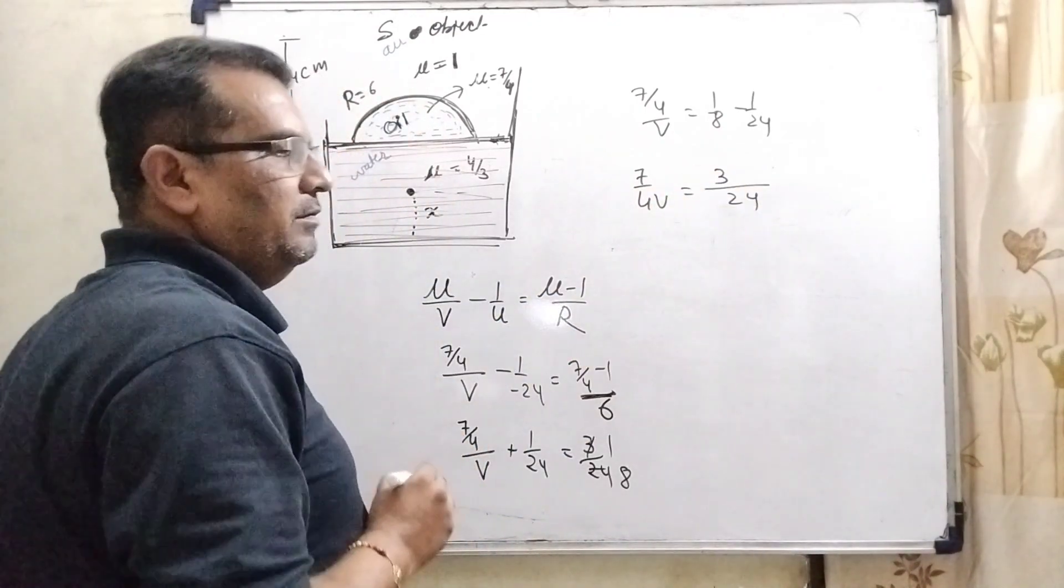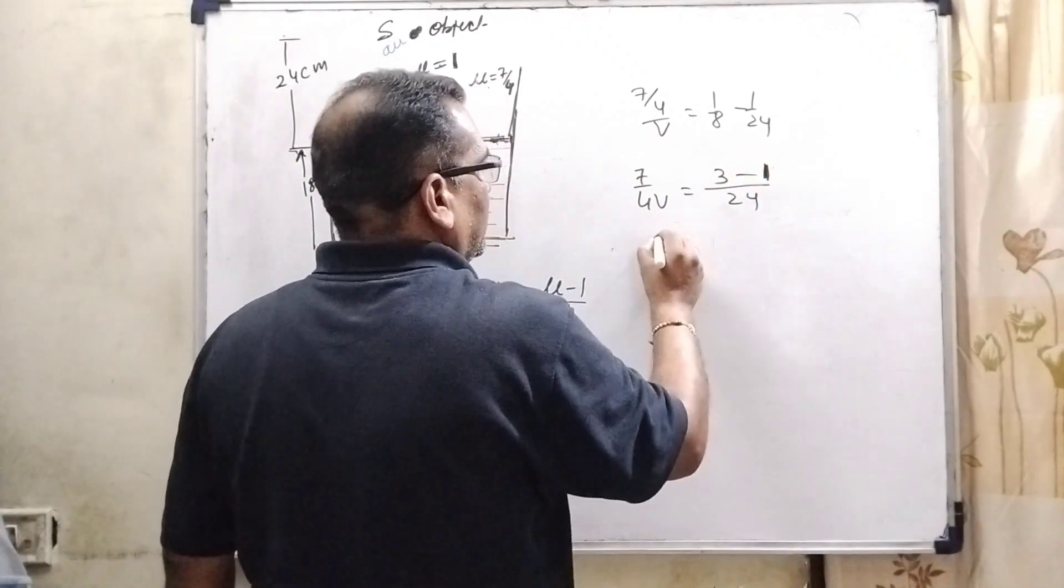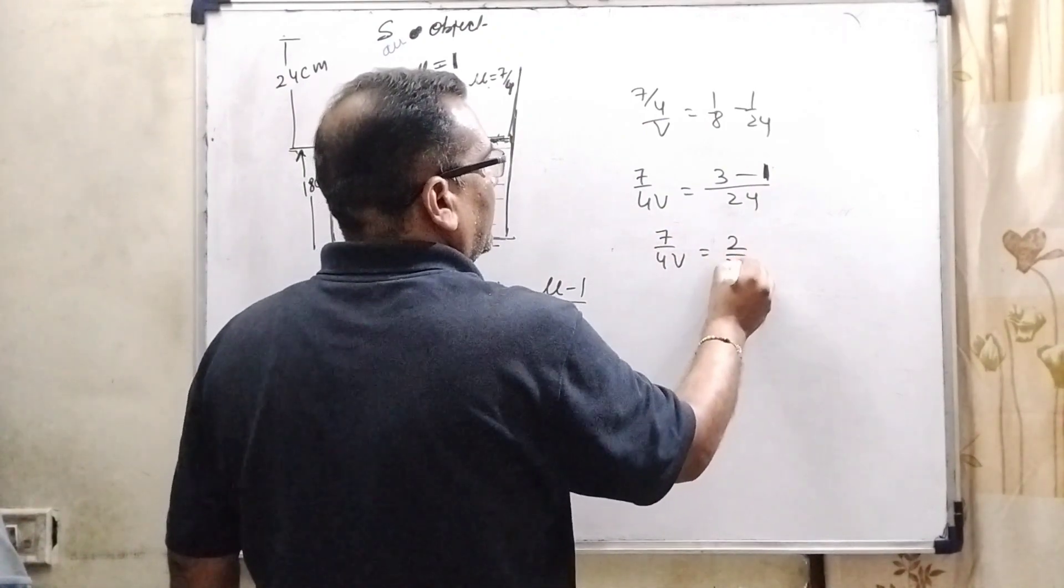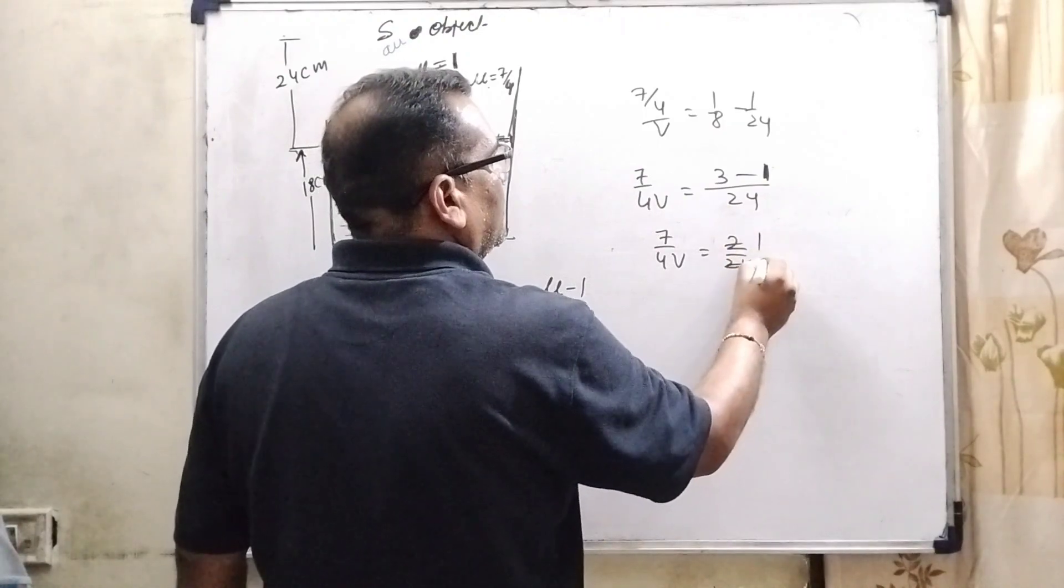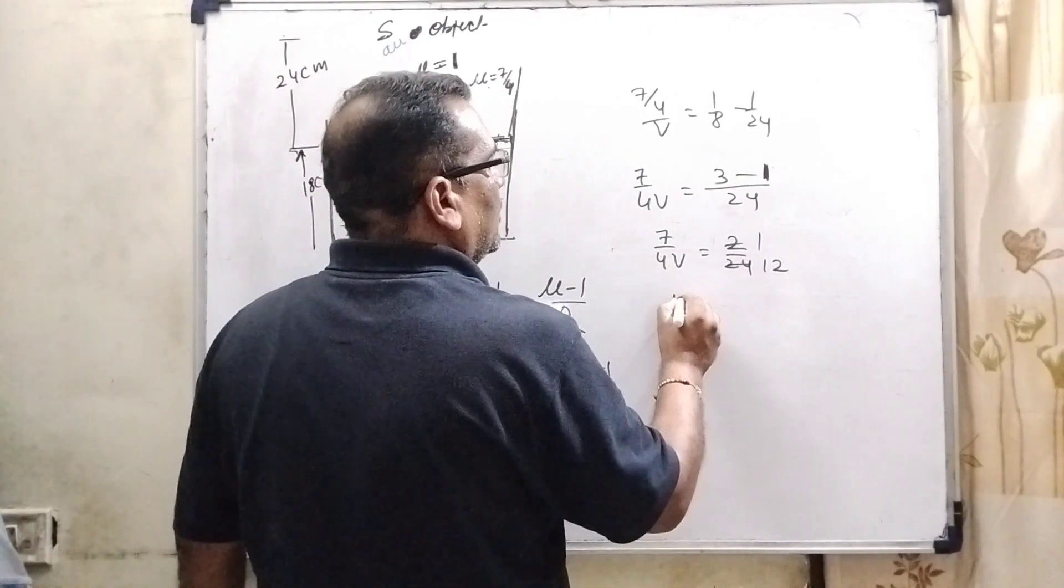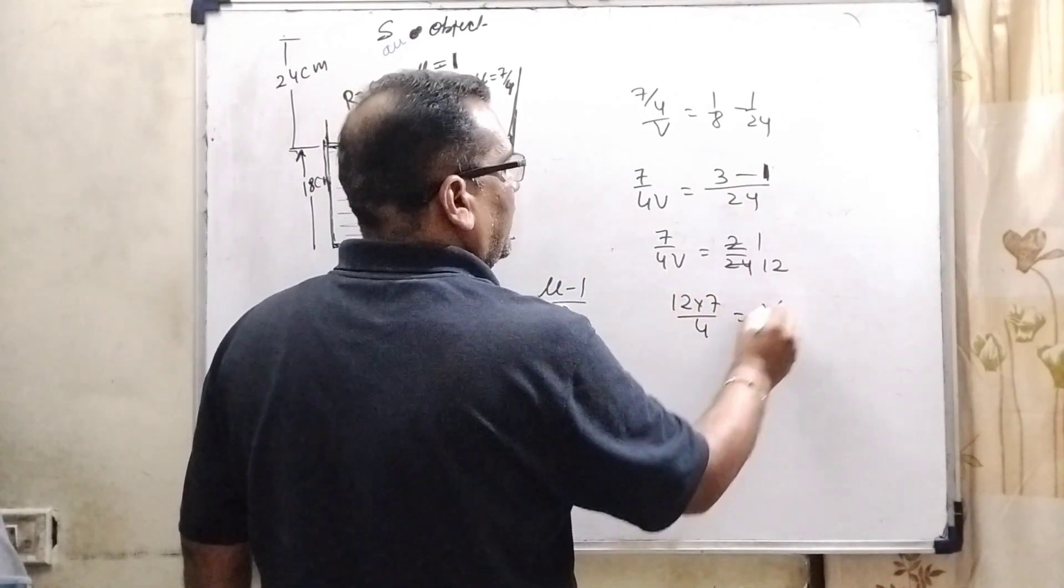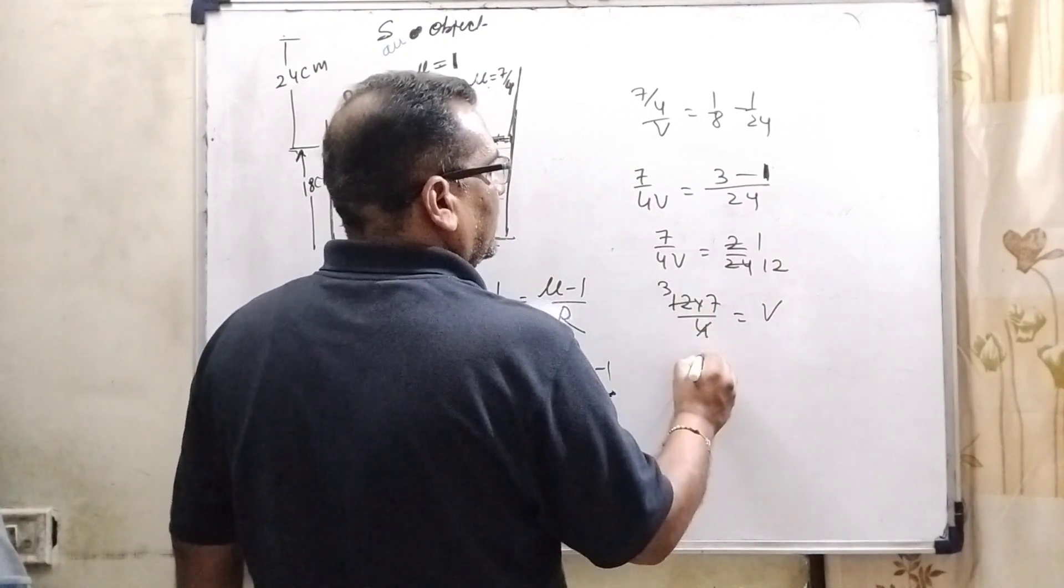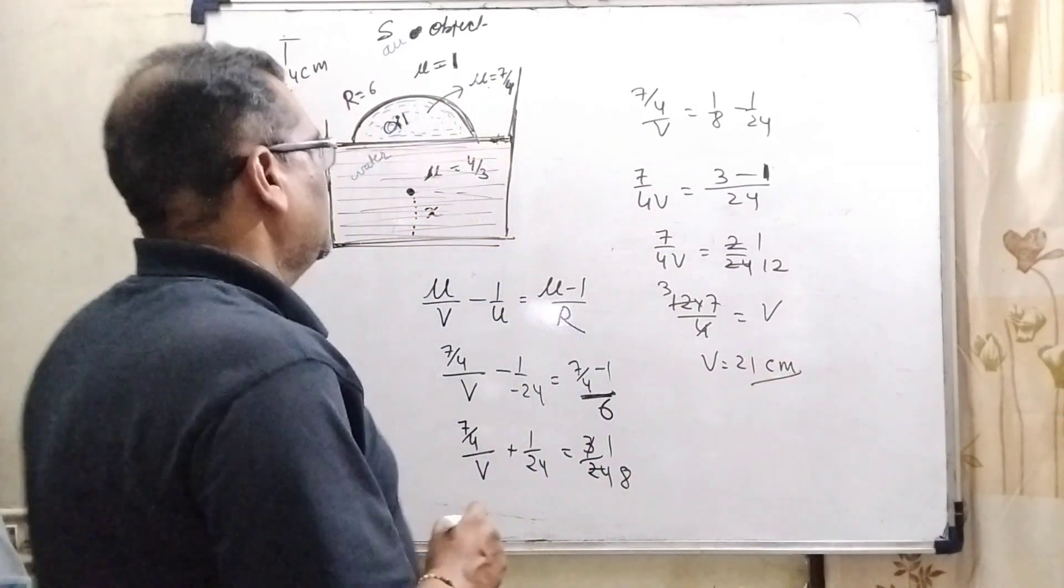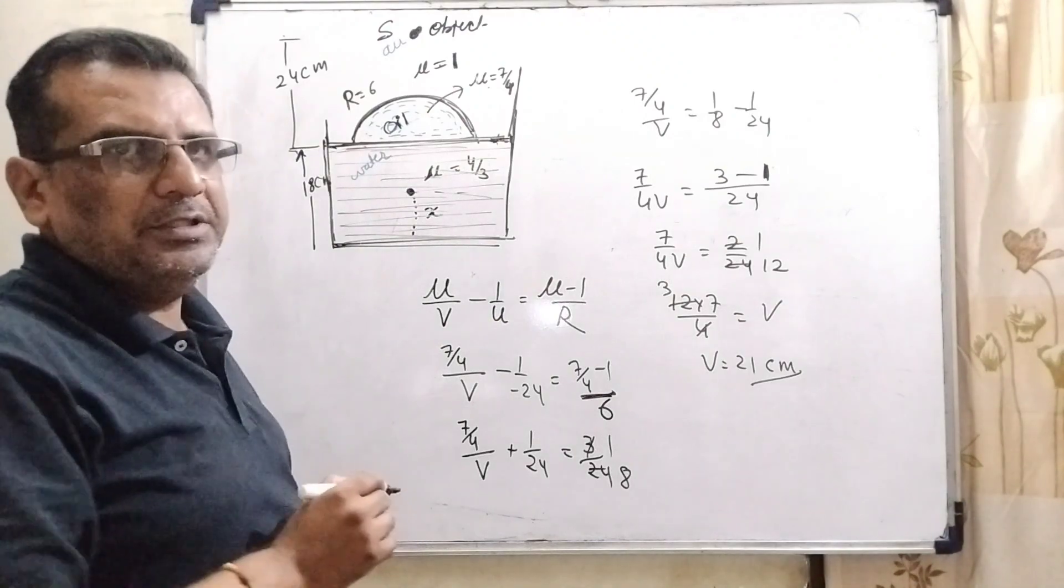8 threes are 24, 3 ones are 3. And 24 ones are 24. So here 1. So 7 by 4 V equal to 2 by 24. 2 ones are 2. And that is 12 times. So here 12 into 7 by 4 equal to V. Then, how much? That is 21 centimeter. So here for the first refraction, image is formed 21 centimeter.